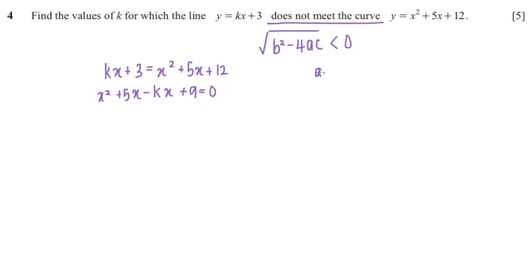So our a is 1, our b is 5 minus k, and our c is 9.